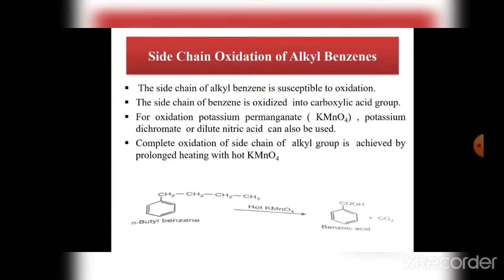In side chain oxidation of alkyl benzene, the alkyl benzene is susceptible to oxidation. The side chain of benzene is oxidized into carboxylic acid — that means benzene containing a side chain, when treated with an oxidizing agent, has the side chain always oxidized to carboxylic acid. For oxidation we use potassium permanganate (KMnO₄), potassium dichromate, or dilute nitric acid.